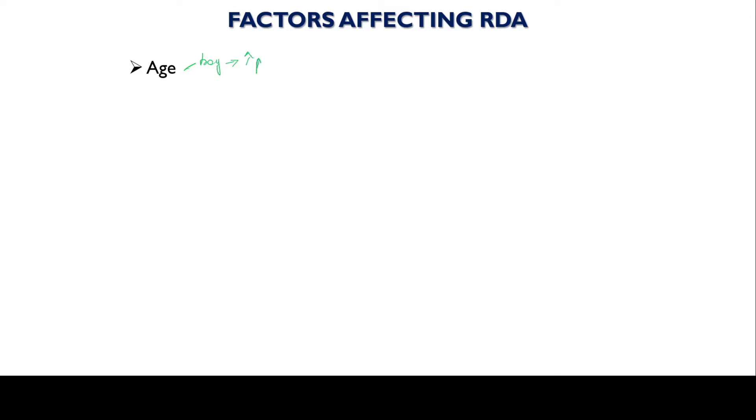The factors affecting RDA are the factors taken into consideration while formulating it. The first factor is age. For example, a growing boy may need more protein for growth and development, whereas an older adult may require comparatively less protein because he needs it only for the maintenance and repair of tissues.